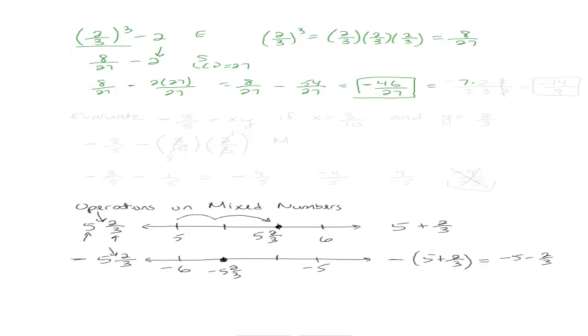Actually, can I? I think I can. 46 is 7 times 2 times 3. 27 is 3 times 3 times 3. So I can reduce it by 3. It becomes negative 14 over 9.